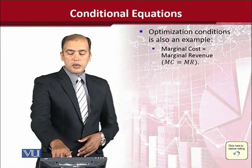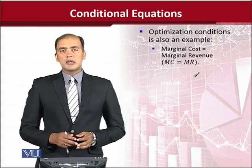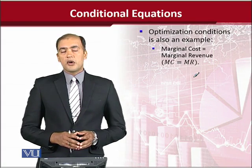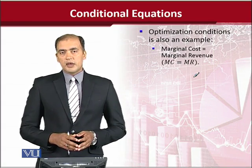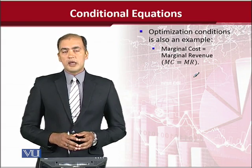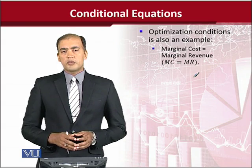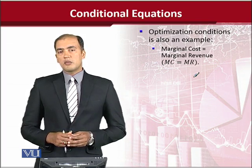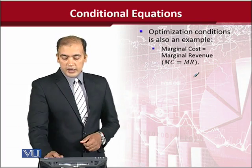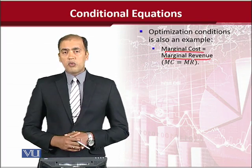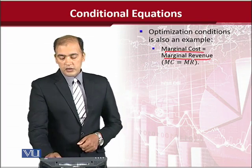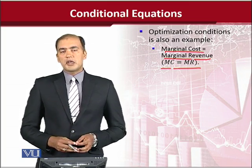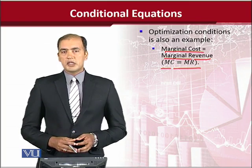We can also talk about another example, which is actually the optimization condition. Optimization is the process of maximizing the benefits or minimizing the costs. In microeconomic analysis, when we try to set a condition for the profit maximization of a firm, we say that marginal revenue is equal to marginal cost. That happens in an equation form with this notation — MC is equal to MR. This is yet another example of a conditional equation that explains the optimization condition.